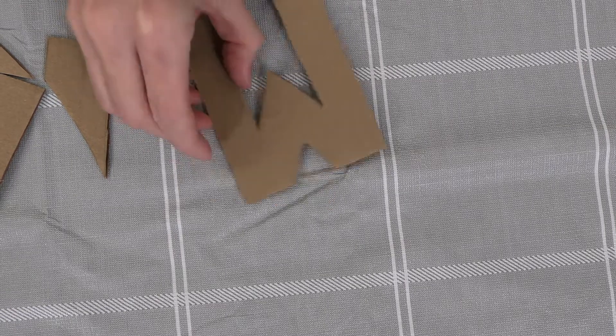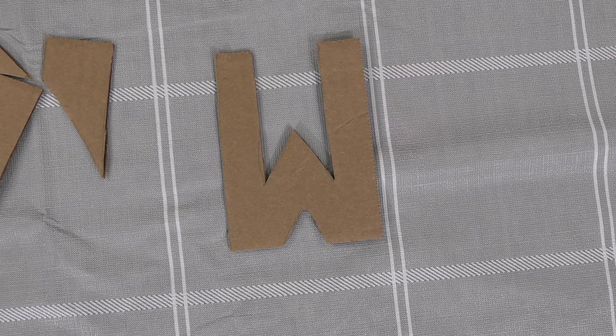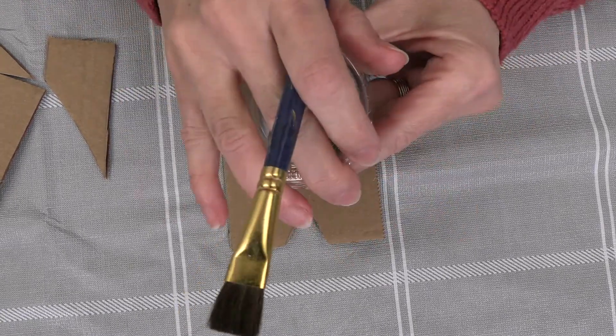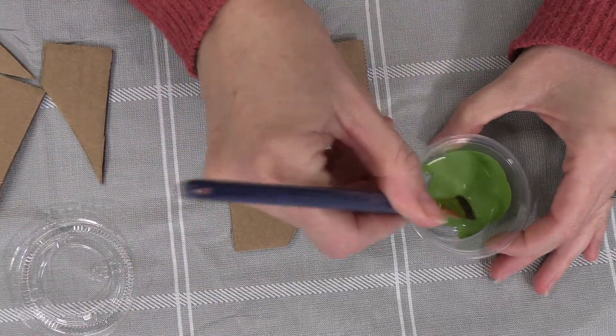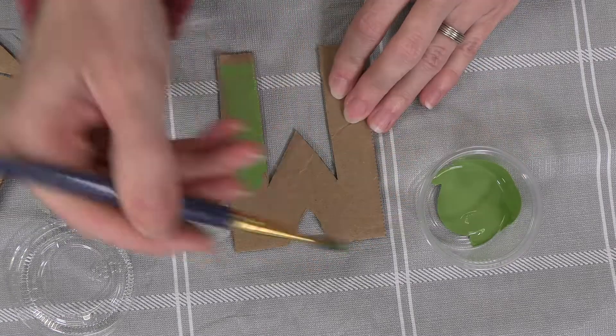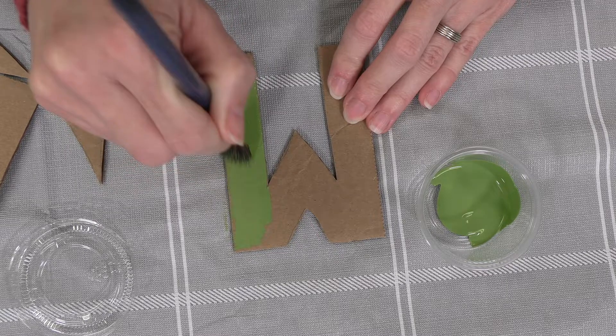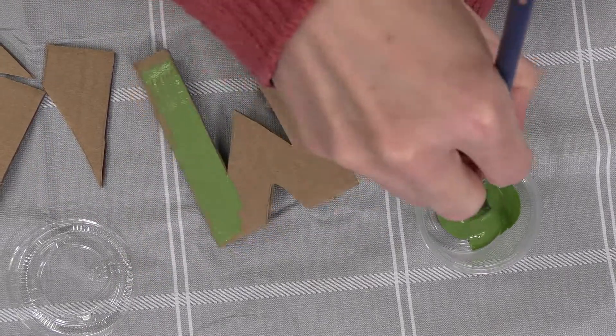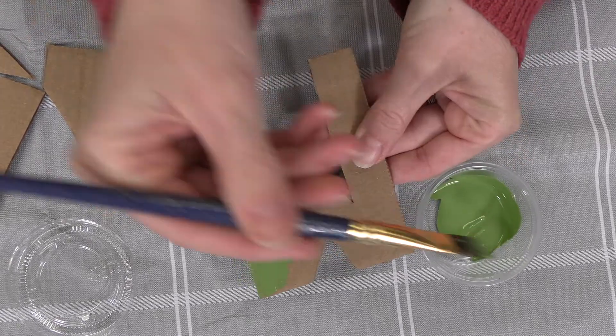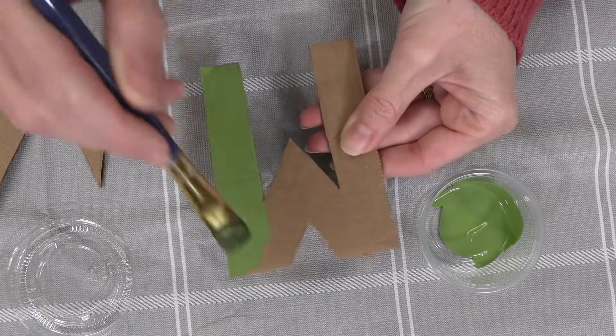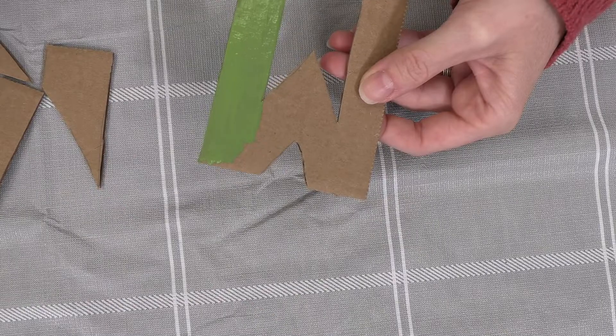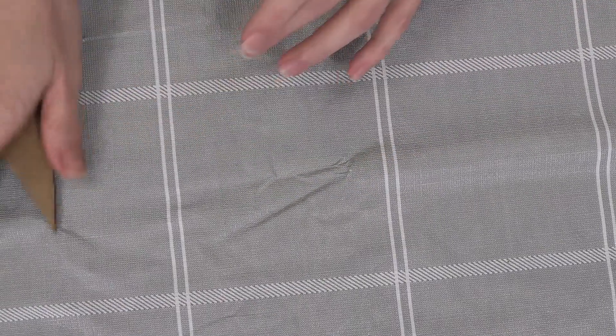So once your shape is cut out, you're going to paint it with the green paint. It's important to do this step first because the green paint is going to need some time to dry, and it's probably going to need a second coat on the cardboard. The cardboard absorbs the paint quite a lot, and this way, if you do a second coat, it will be nice and thick so that when you see the shape behind the flowers, it will be covering the cardboard color.